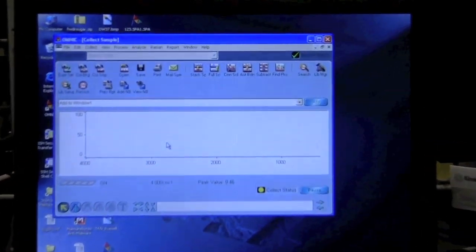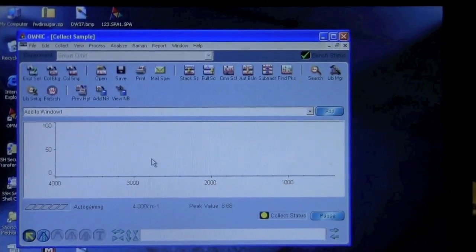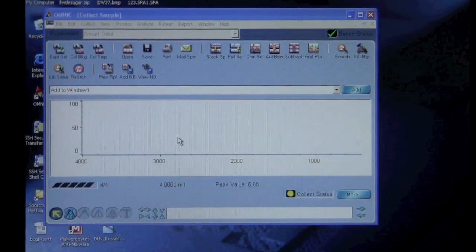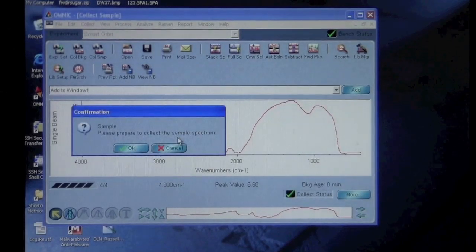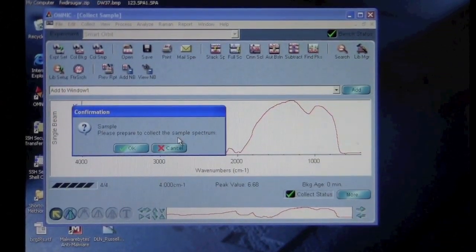It should collect the number of scans that you set for the background. After it finishes collecting the background, it should say prepare to collect the sample spectrum. Now we can go back to the cell.